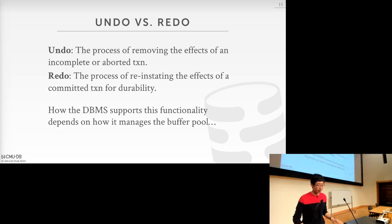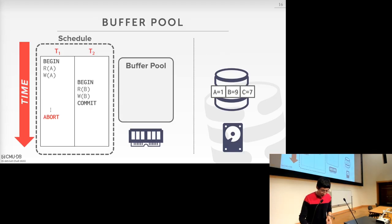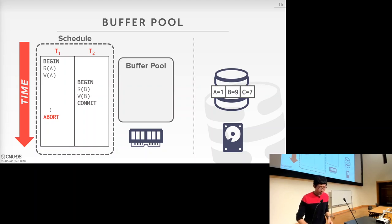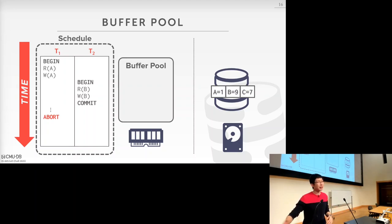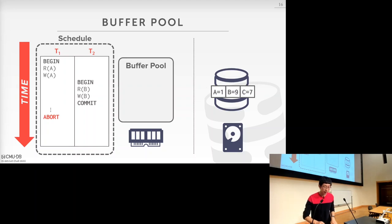Undo records store the effects of any uncommitted transaction, so that when a transaction aborts, the database system can restore any potential changes by those aborted transactions. Redo records store the changes that any transaction applies, so that when there's a power failure, we can look back and see what modifications were made by committed transactions — and these redo records help the system restore all modifications by committed transactions. To put everything into context: say we have two transactions, T1 and T2. For today's discussion, we'll ignore concurrency control and just assume some mechanism already handles correct scheduling.